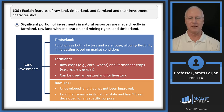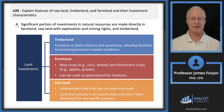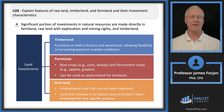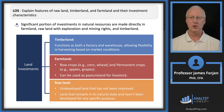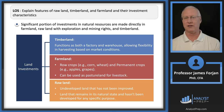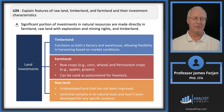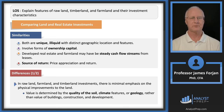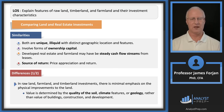Raw land is undeveloped land that has not been improved — it hasn't been developed for any specific purpose. You may buy it because you have a specific purpose in mind, or because someone like Sam Walton might come along and say 'I want your land to build a Walmart.'